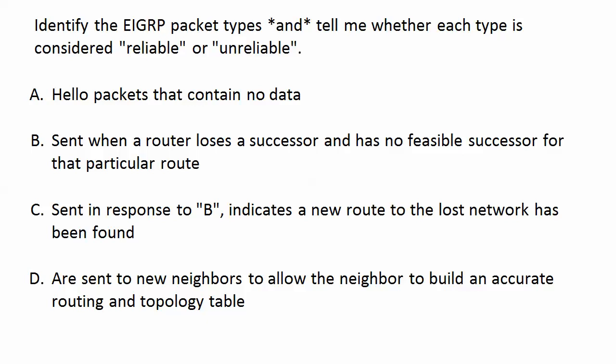A: a hello packet that contains no data. B: sent when a router loses a successor and has no feasible successor for that particular route. C: sent in response to B, indicates that a new route to the lost network has been found. And finally, D: are sent to new neighbors to allow the neighbor to build an accurate routing and topology table.